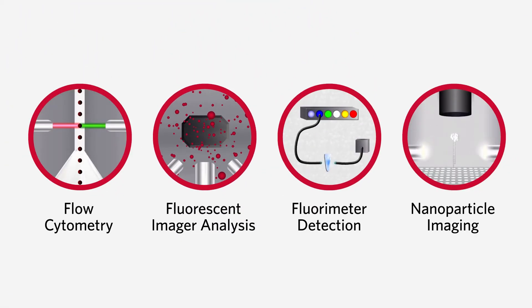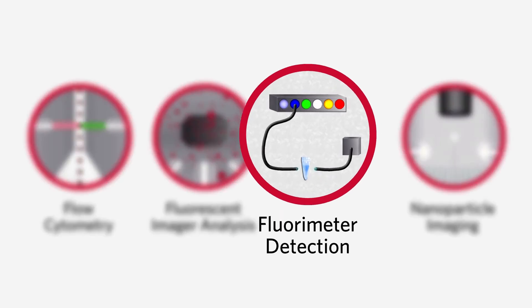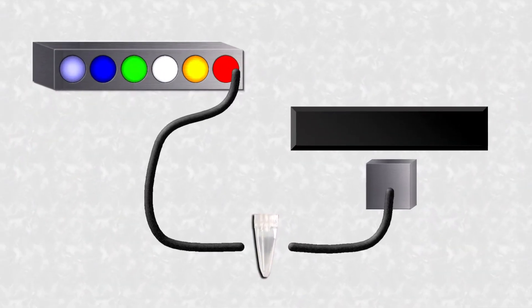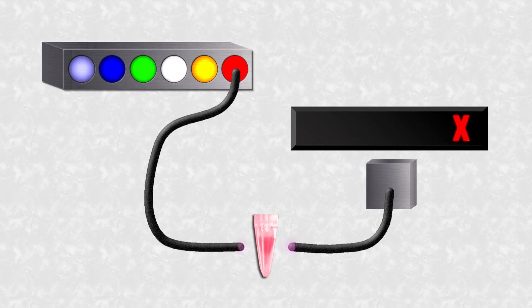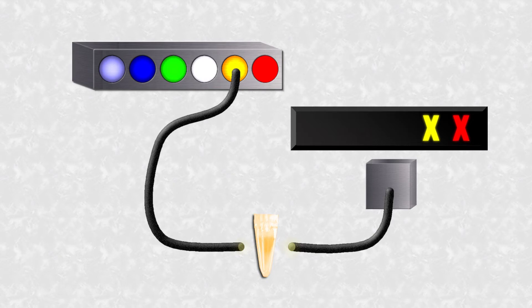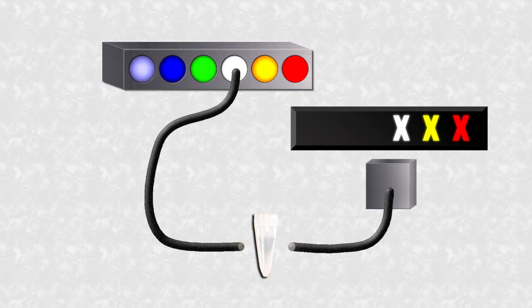Another detection method Luminex uses is fluorimeter detection. This method uses 6 LEDs that shine on 6 photodiode detectors using fiber optic cables. Each LED is a different wavelength and will excite different reporters.